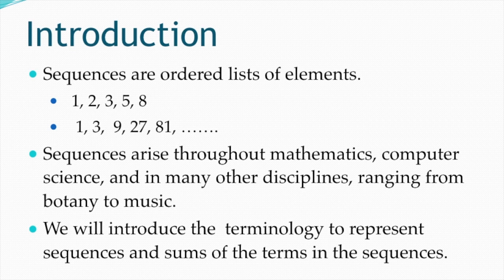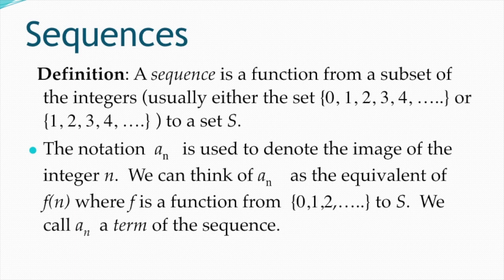A sequence is basically an ordered list of elements, like 1, 2, 3, 5, and 8. This could go all the way to infinity, or it could be a subset of elements — for example, the even numbers from 1 to 100 or the odd numbers from 1 to 100. The mathematical definition of a sequence is a function from a subset of integers.